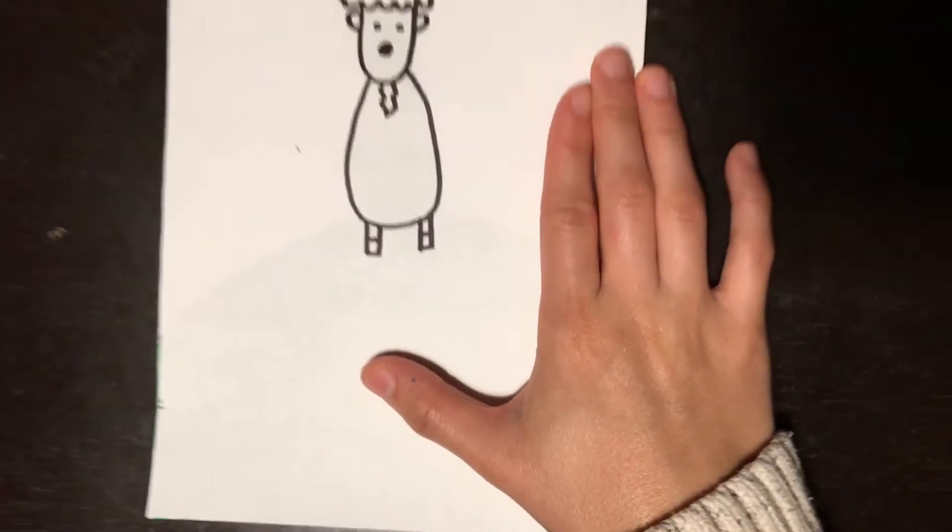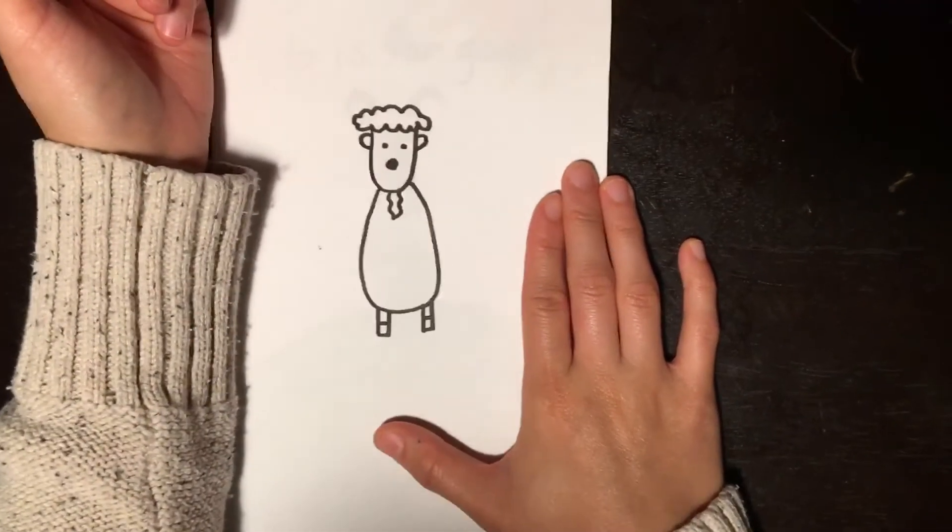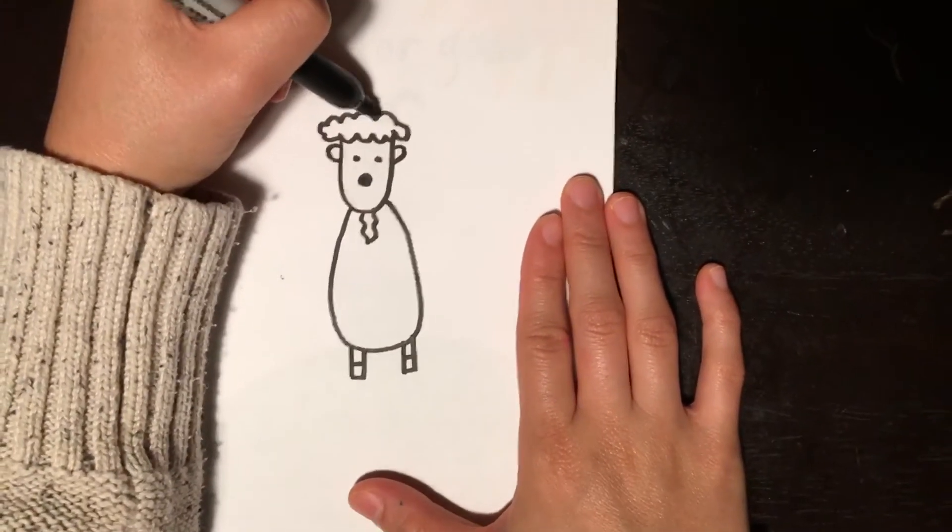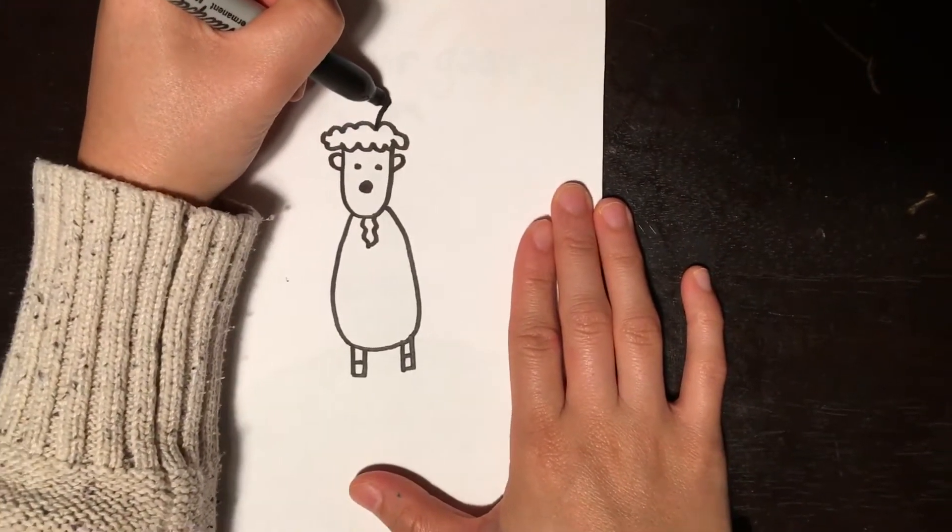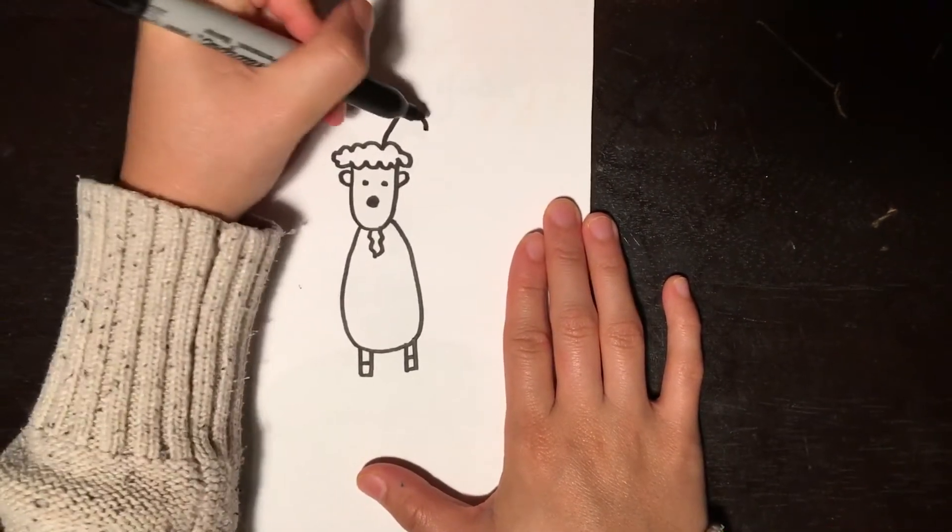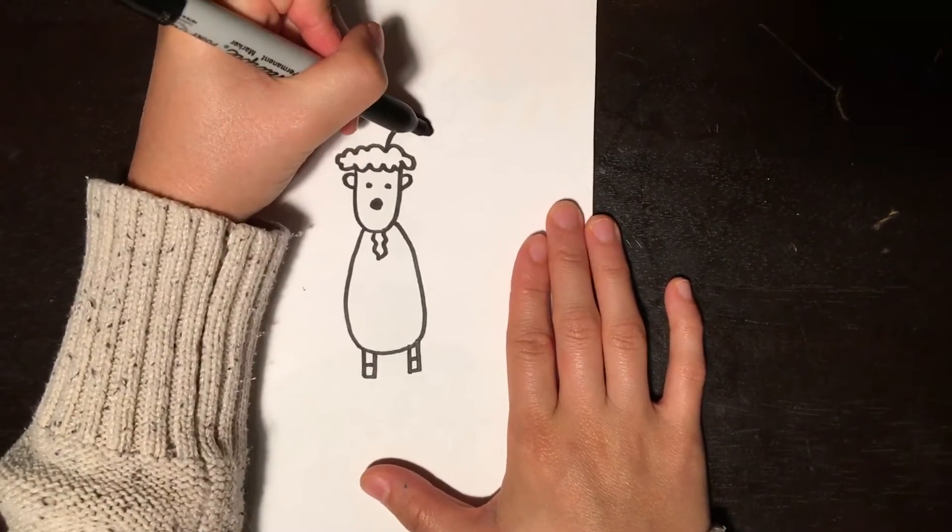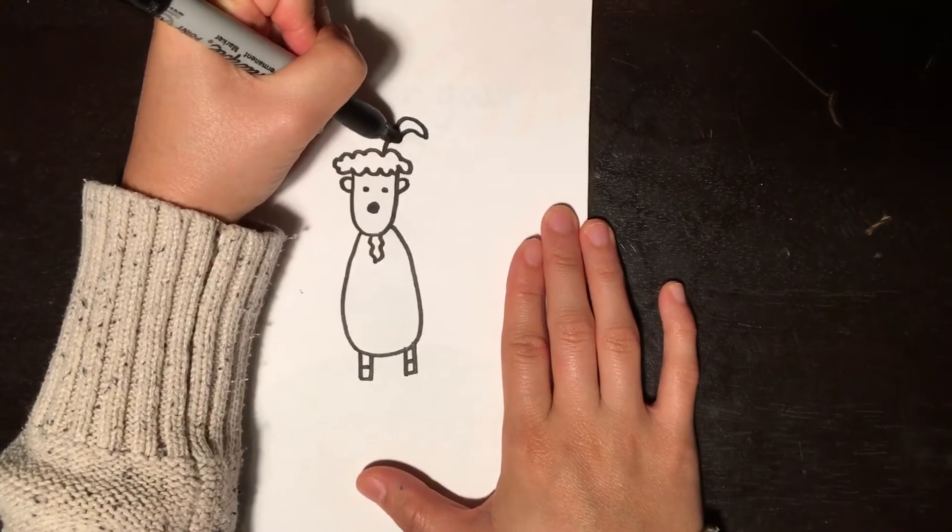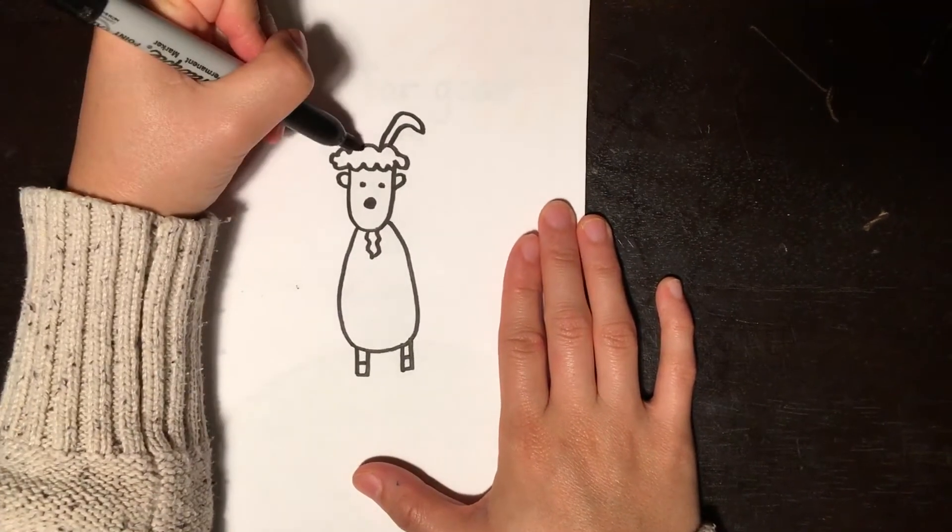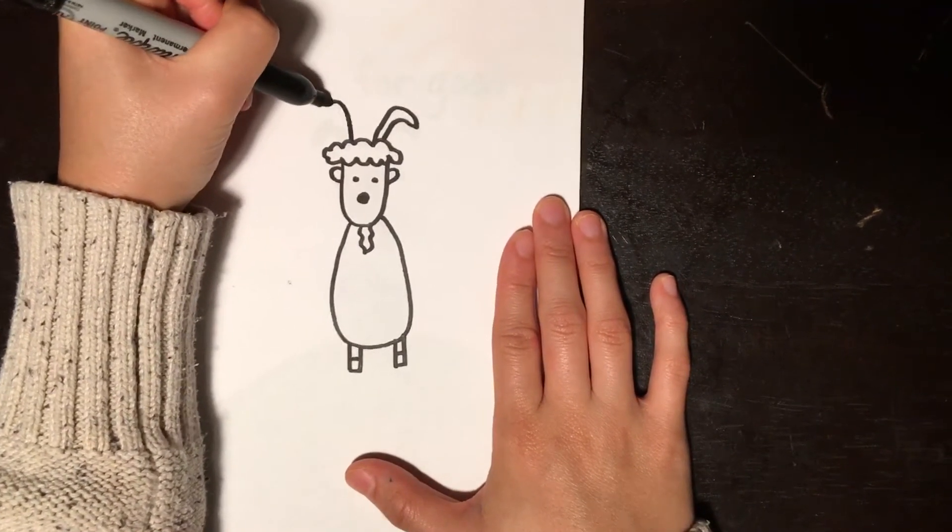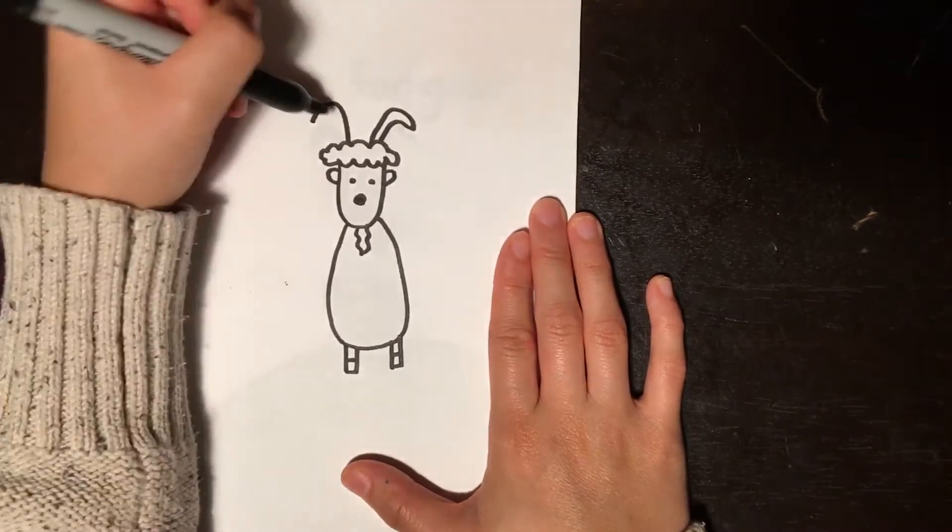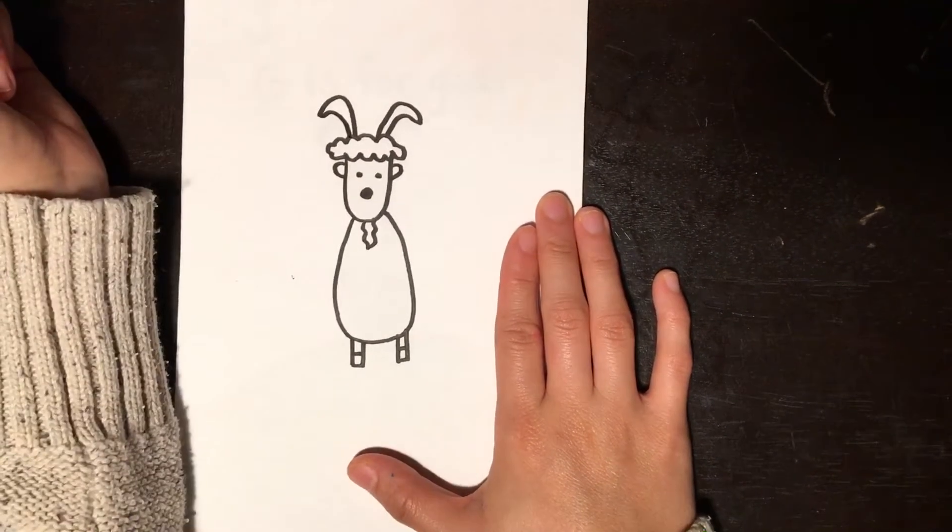Well actually just kidding. I forgot. Of course a goat needs its horns. So I'm gonna come up here and go all around like this. Kind of like a candy cane. And then up like that. I'm gonna come up here. Go the opposite way. Like another candy cane. And come down like this.